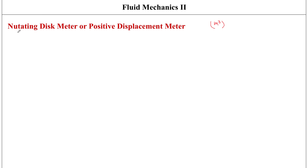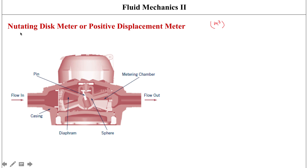One type of volume flow meter is called a nutating disc meter, also called a positive displacement meter. 'Nutating' refers to a wobbling kind of movement. This type of disc meter is typically used to measure the amount of water used in a domestic or residential water system, so the utility can bill the household based on volume consumed.